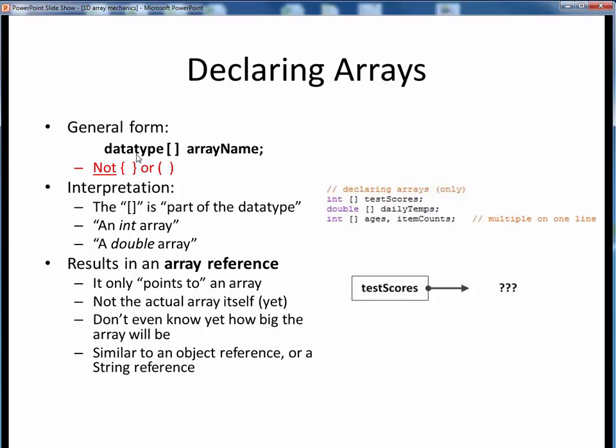Here's the general form of declaring some array. We specify the array's data type, followed by opening and closing square brackets, followed by the desired array name. In particular, note that these are square brackets, not curly braces or parentheses, which are both common errors when setting up arrays.